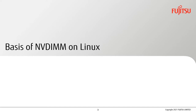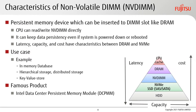Let's start with the basics of NVDIMM on Linux. NVDIMM is a persistent memory device which can be inserted into a DIMM slot like DRAM. The CPU can read or write NVDIMM directly, but it can keep data persistency even if the system is powered down or rebooted. Latency, capacity, and cost have characteristics between DRAM and NVMe.